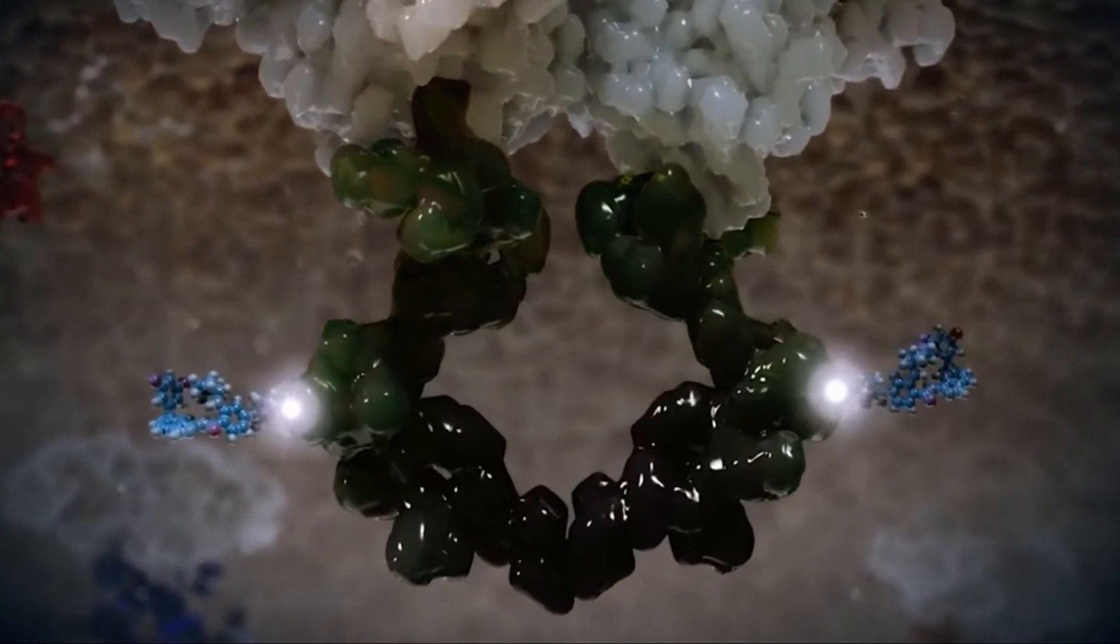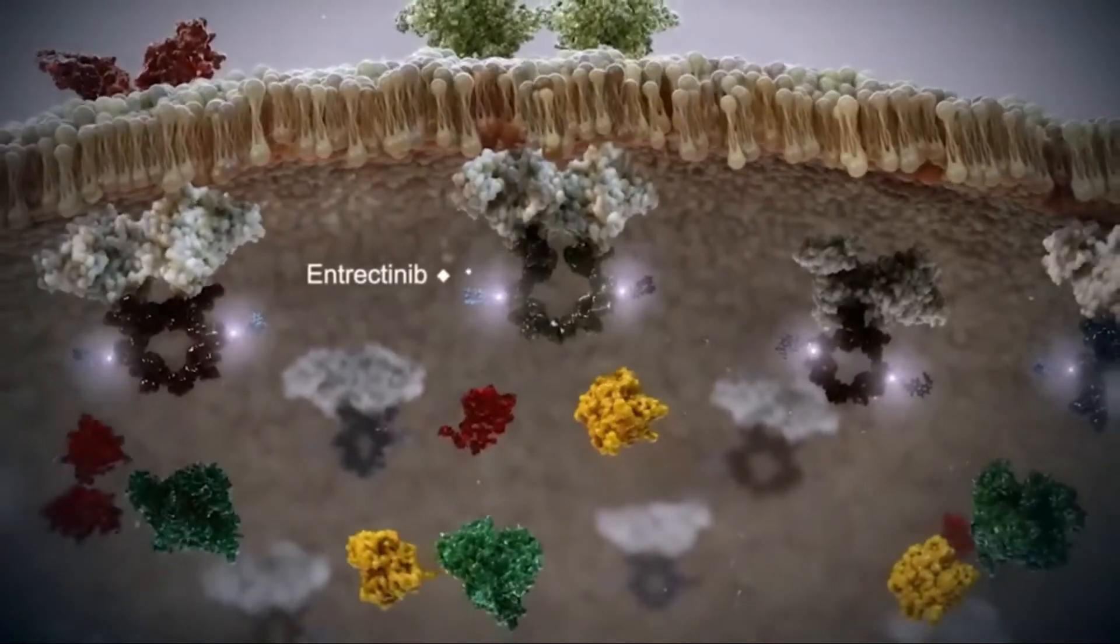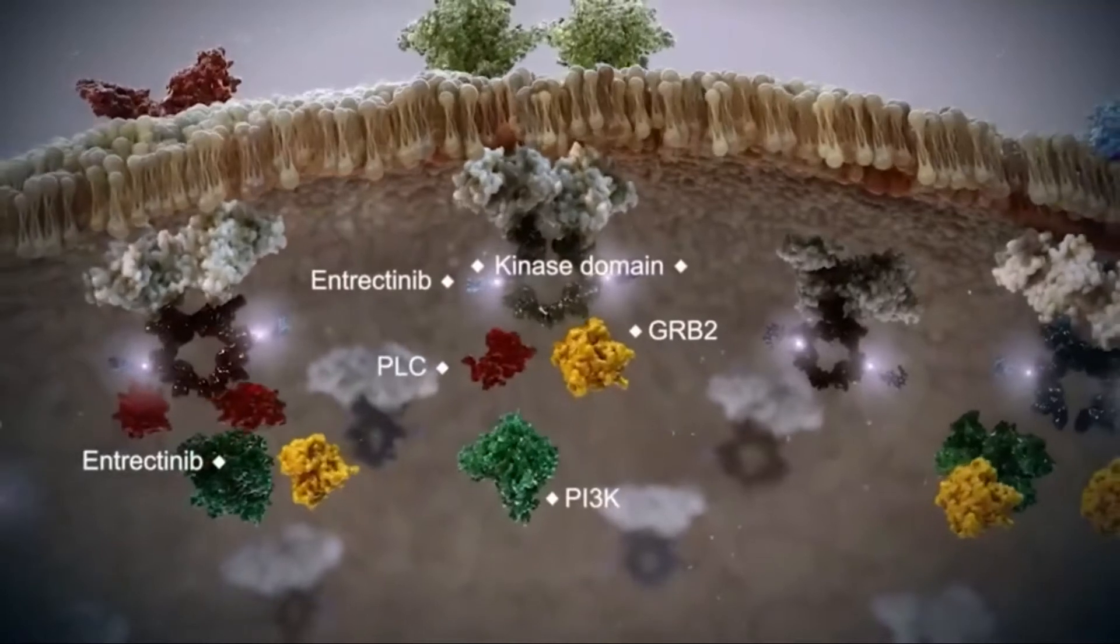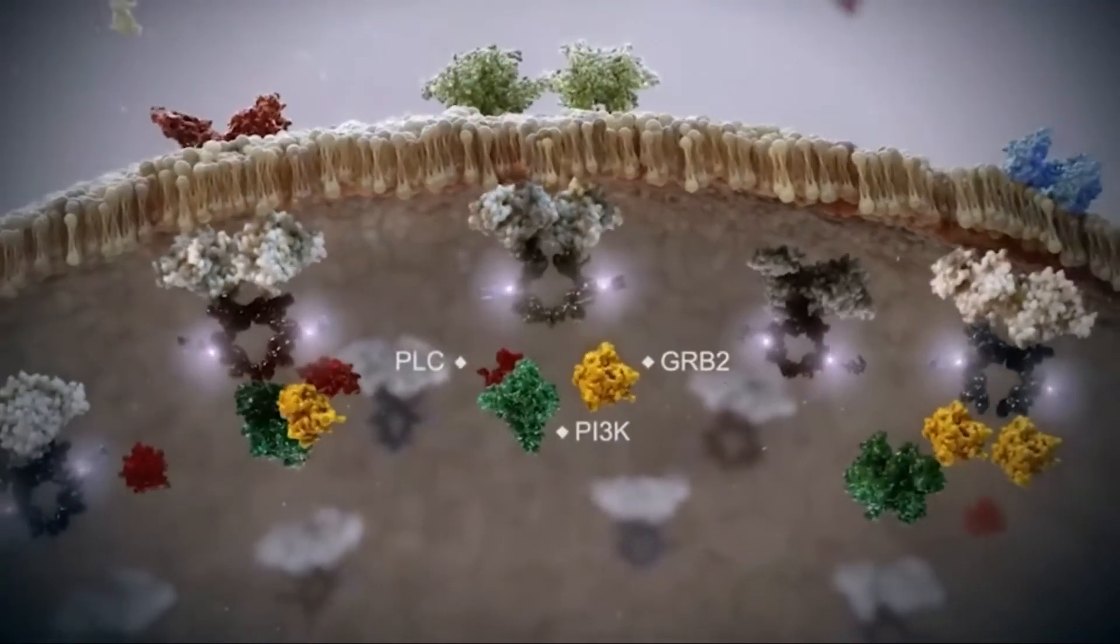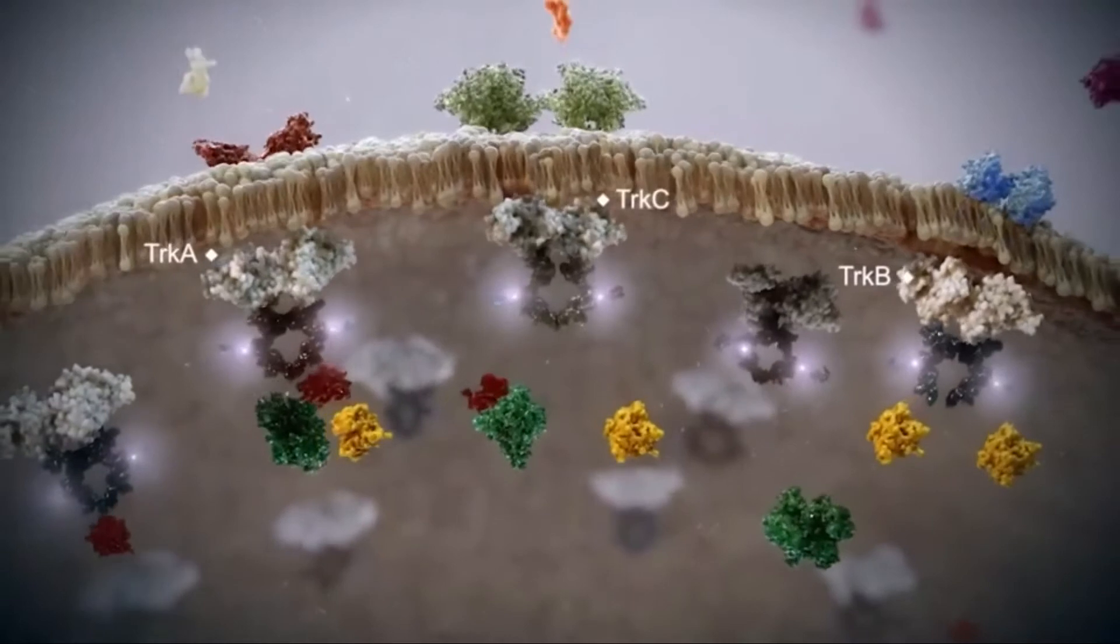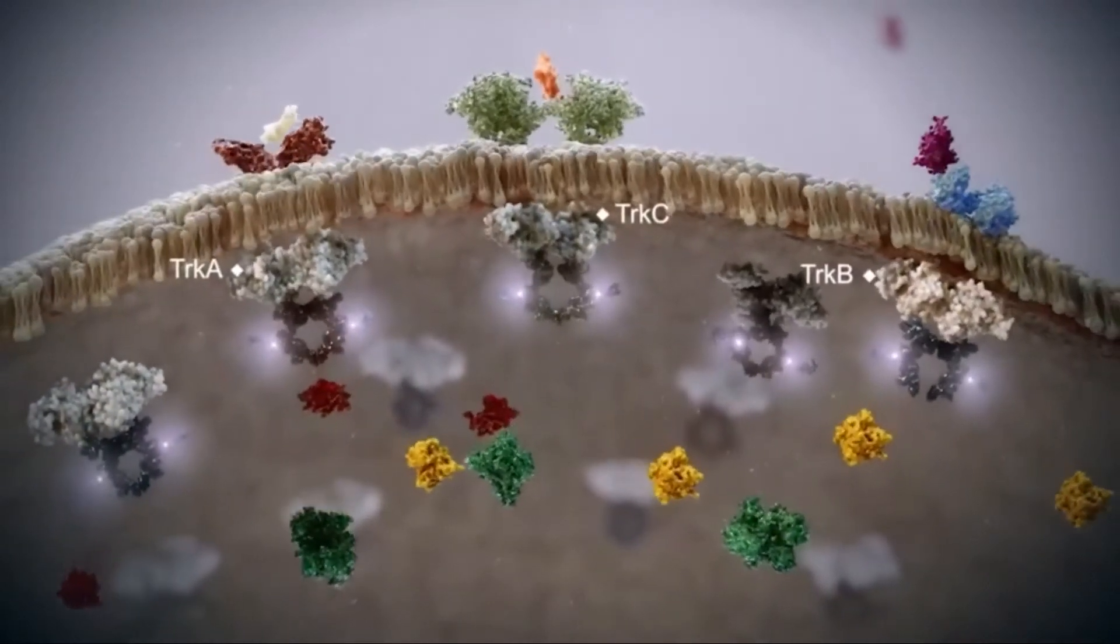Entrectinib binds and deactivates the kinase domains of TRK A, B, and C, ROS1, and ALK at low concentrations, thus slowing uncontrolled tumor growth and survival of cells harboring these fusion proteins.